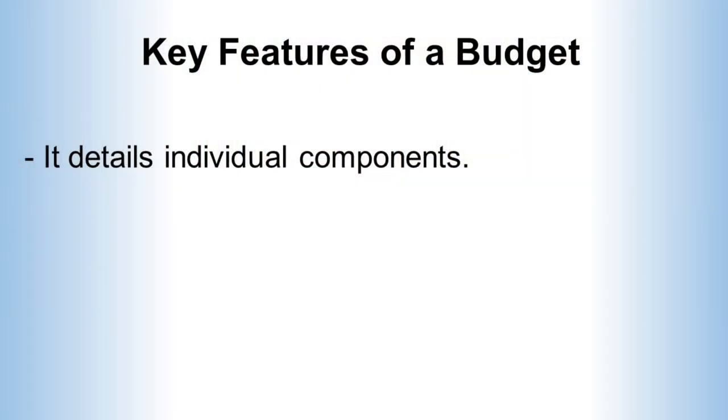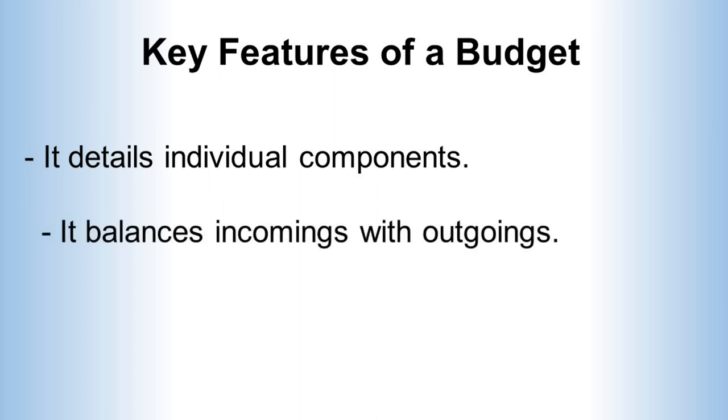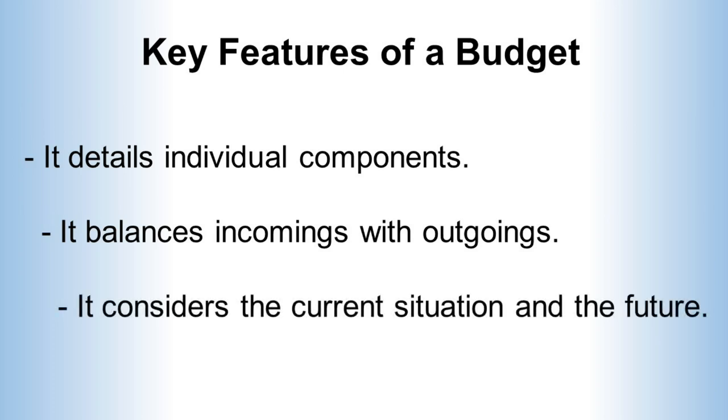So what is a budget? In almost all systems, and certainly those produced by the aeronautical and astronautical industries, a consequence of requirements will be limitations of the resources available to the system. Budgets are the way these limited resources can be allocated, monitored, and controlled. The key features of a budget are that it details the individual components that produce and consume the resource, it balances the incomings and outgoings, and it is normally an estimate for the future.